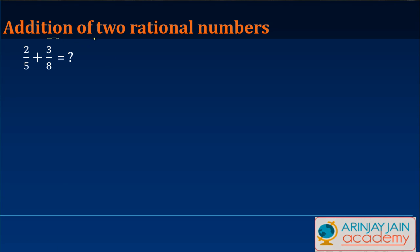Let us look at how to carry out the addition of two rational numbers. So you are given 2 upon 5 and 3 upon 8. How do you do the addition of these two numbers?